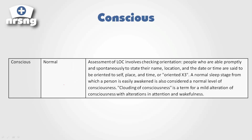We're going to go through the levels of consciousness and talk about the differences and how they apply. When you start your neurological report or exam, you'll say A and O times three or four — that's going to depend on where you work. Basically, what we're trying to determine is does the patient know their name, location, and the date? Sometimes we'll also include situation in that.